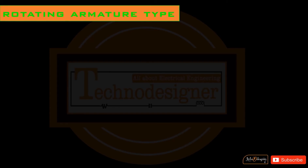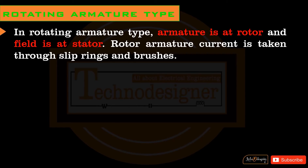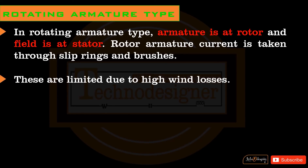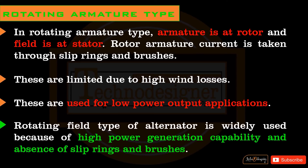Rotating armature type: In rotating armature type, the armature is at the rotor and the field is at the stator. Rotor armature current is taken through slip rings and brushes. These are limited due to high wind losses and are used for low power output applications. Rotating field type alternators are widely used because of high power generation capability and absence of slip rings and brushes.